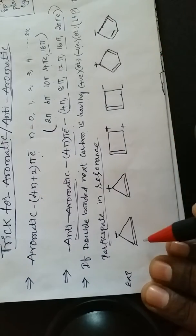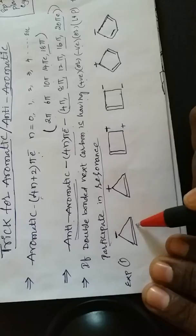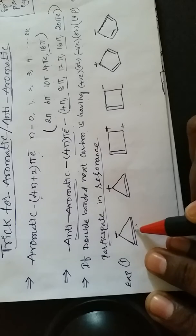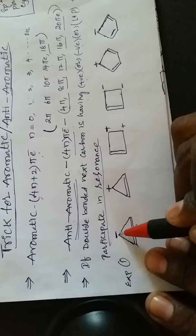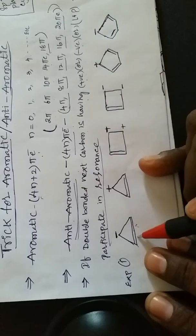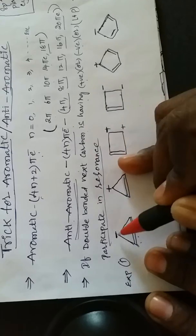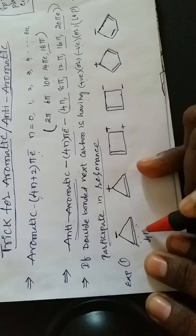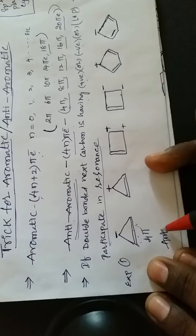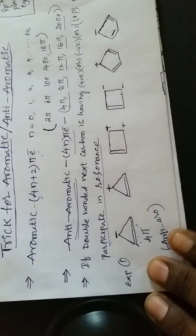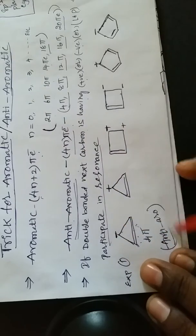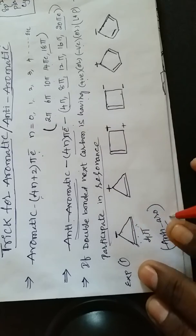Now take the first example. In this structure, there is one double bond, and the next carbon has a negative charge. As I said, a negative charge participates in resonance, so it contributes one pi electron count. Double bond gives two pi electrons, and the negative charge contributes two more — total four pi electrons. So this belongs to anti-aromatic.